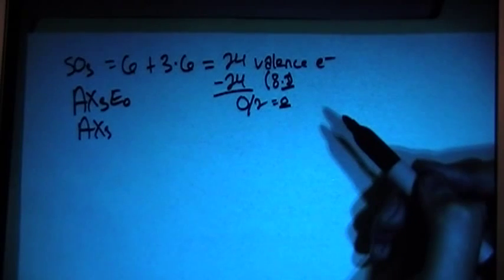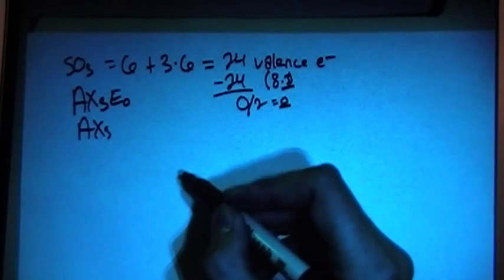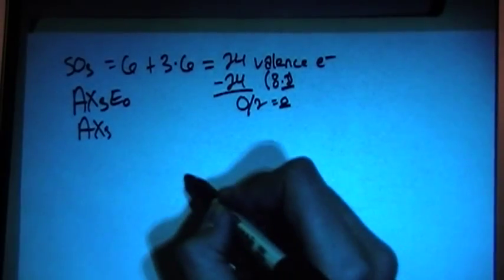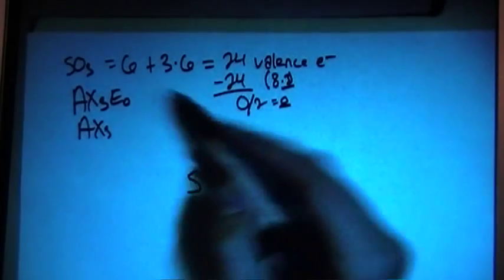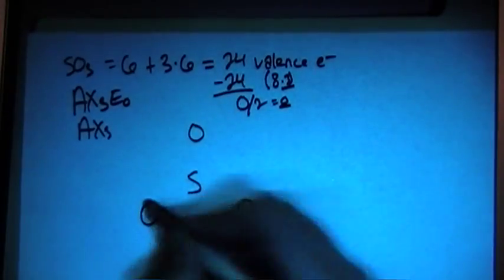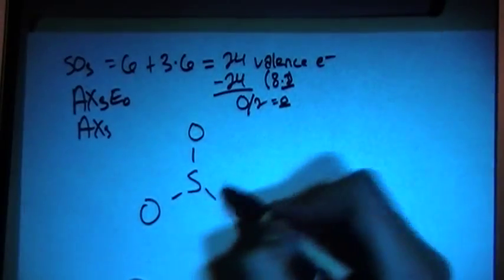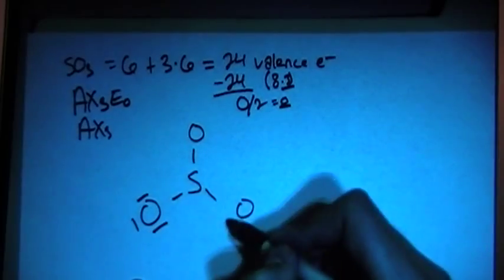For right now, let's go ahead and start to draw this structure. So you have SO3, S will be in the middle, and then there's going to be 3 oxygens surrounding it. So we can connect them with single bonds, and then let's fill out the oxygens.